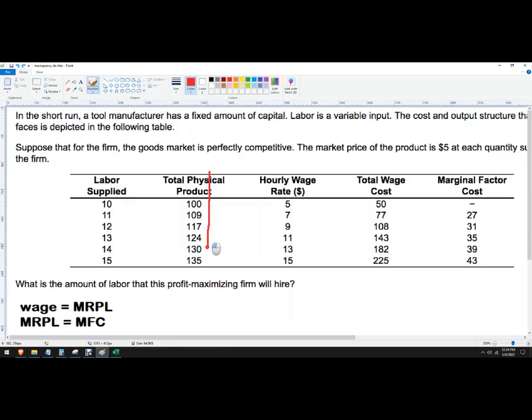Okay, so I've got total physical products and now I want marginal products, and then I want marginal revenue product of labor. Essentially how much is each worker worth. I don't really know what that value is before that, but we're going to hire that worker anyway.